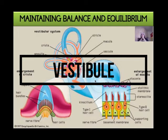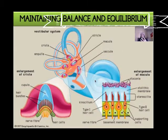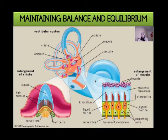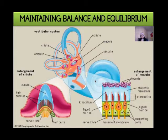The receptors for balance and equilibrium are sitting inside the semicircular canals, which lie within our vestibule. It is these receptors that enable us to maintain our balance and equilibrium — equilibrium meaning our stability or steadiness.